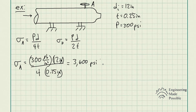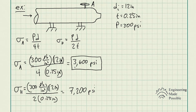For the axial stress or the longitudinal stress, we get 3,600 pounds per square inch. Now let's go ahead and solve for the hoop stress. For the hoop stress, we have 7,200 pounds per square inch.